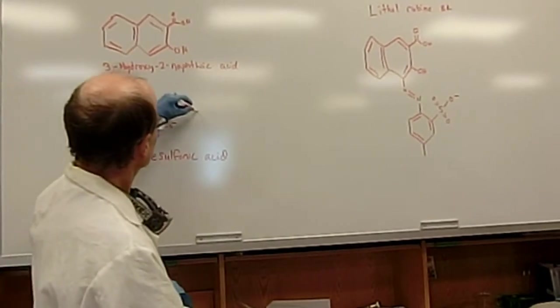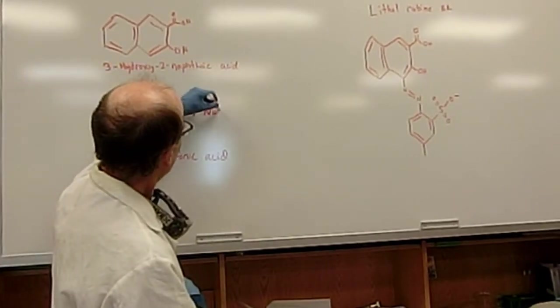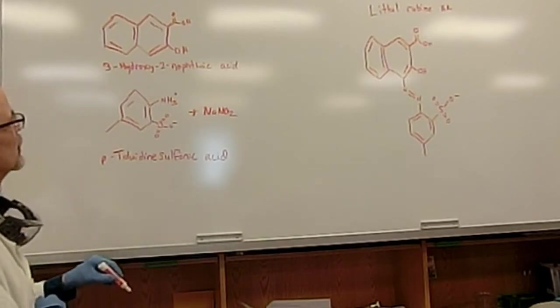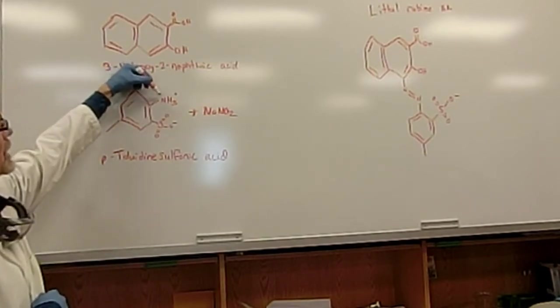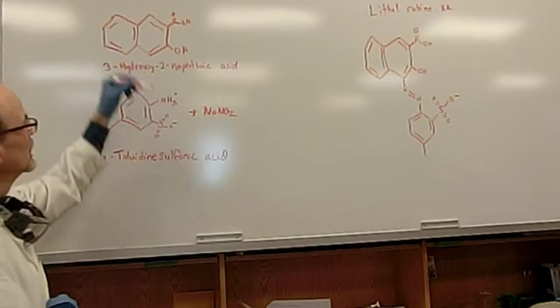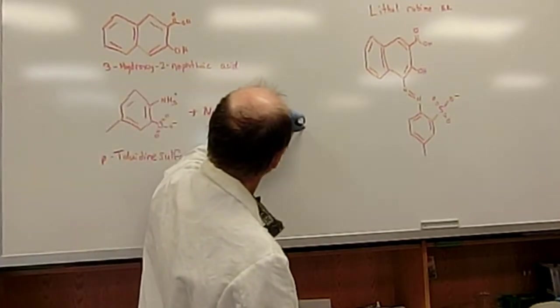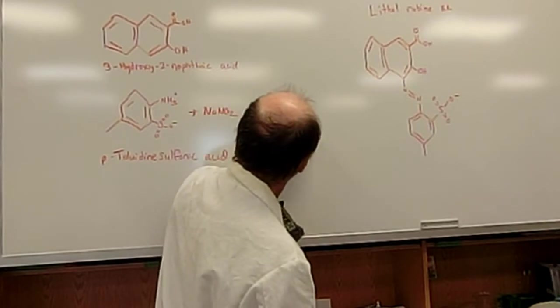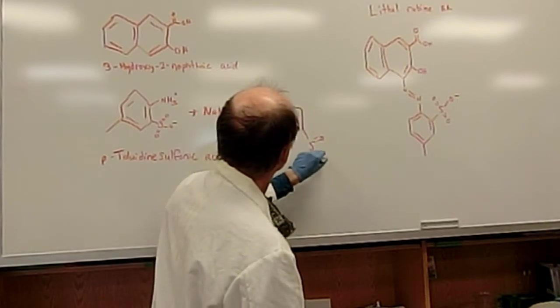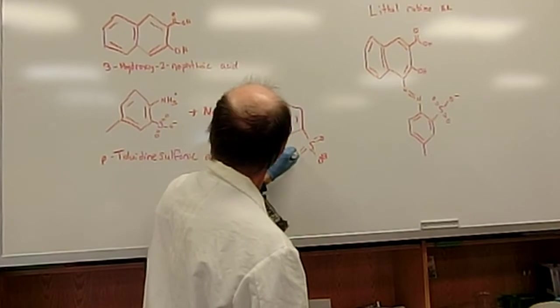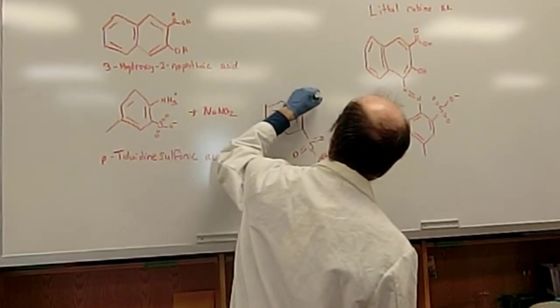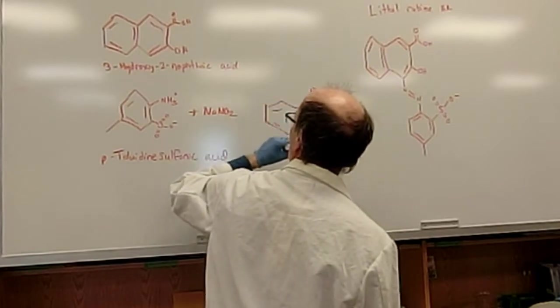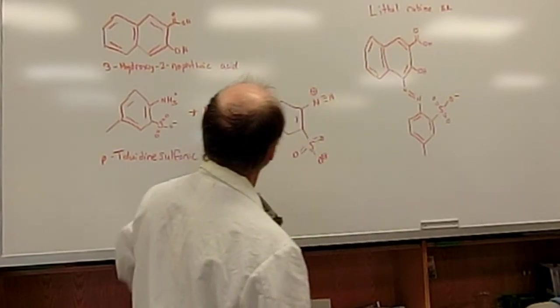The first step that we'll do is add sodium nitrite to the sulfonic acid and it's going to convert the NH3 group to a diazonium salt, which will look like this. And this we discussed in our pre-lab lecture. And that is our key salt that we want to make.